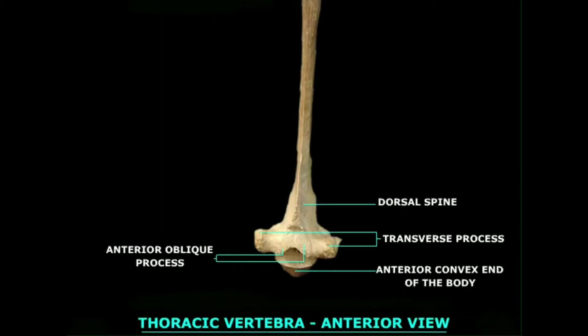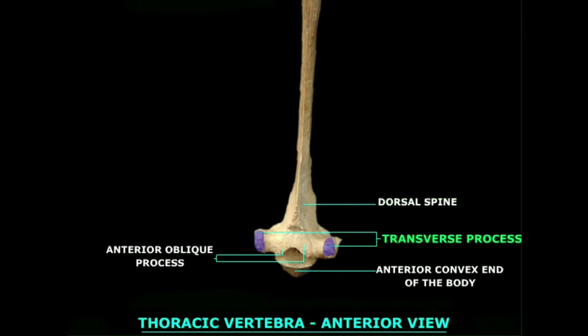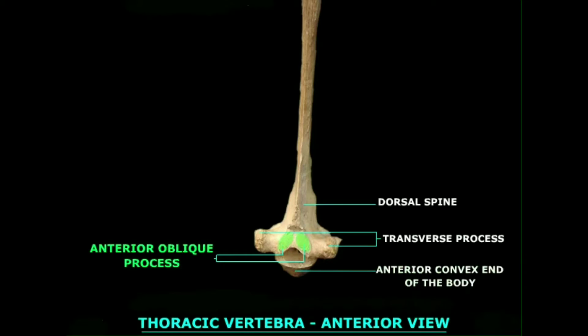Thoracic vertebrae anterior view. This picture shows the visible features on the anterior view of the second thoracic vertebra. The red shaded structure is the well developed dorsal spine. The blue shaded areas on either side of the body are the transverse processes. The yellow shaded convex structure is the anterior end of the body of the second thoracic vertebra. Below the dorsal spine are the anterior oblique processes, which are colored green.